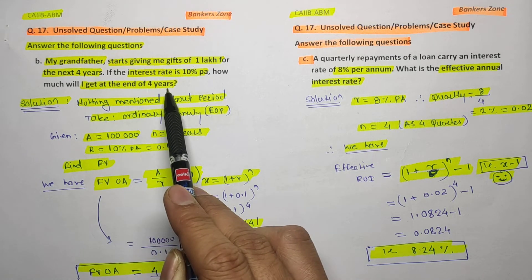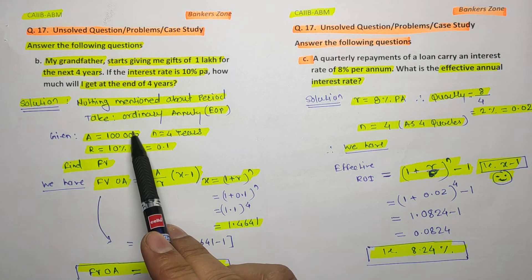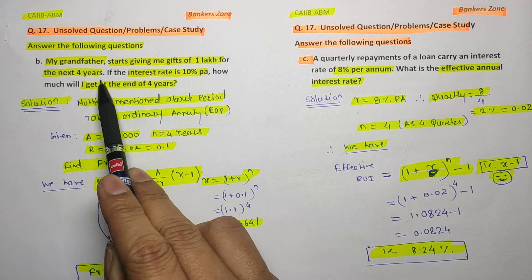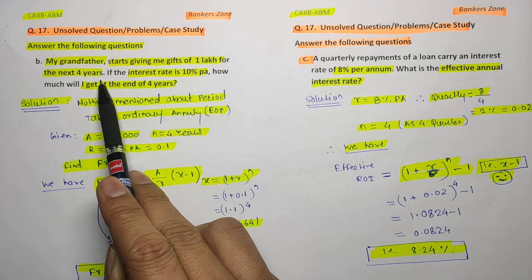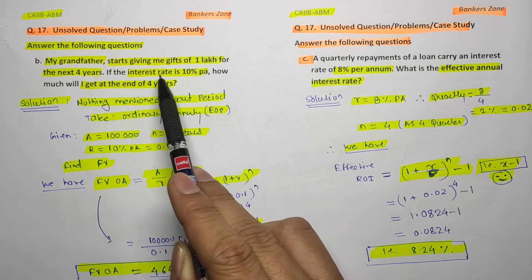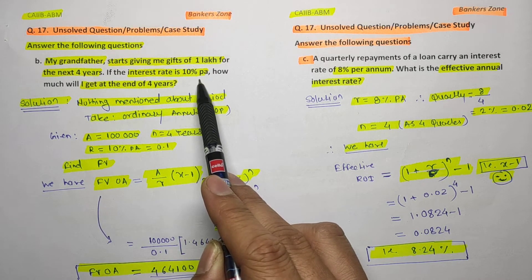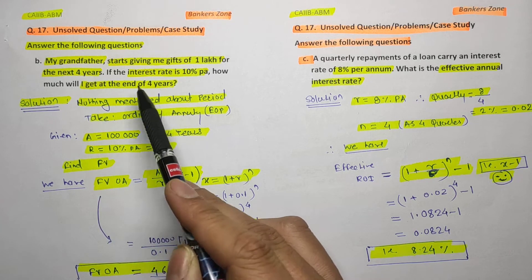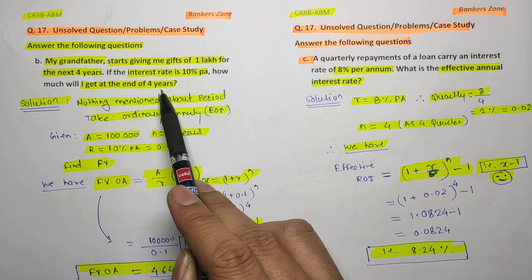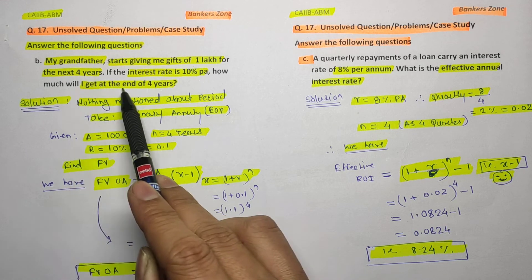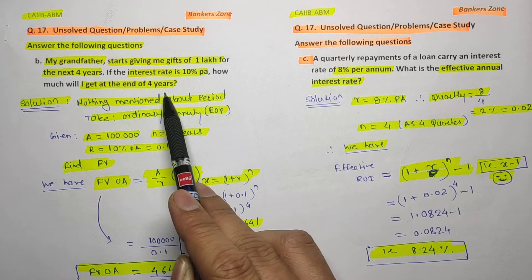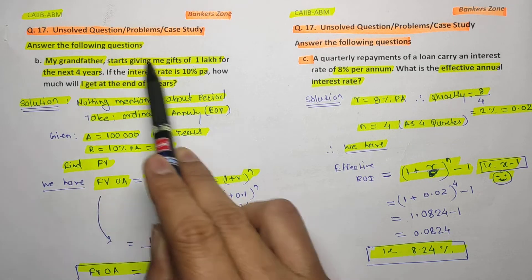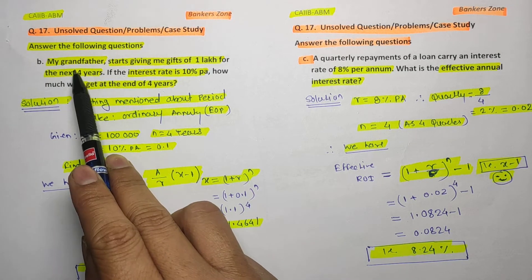It is very simple — my grandfather is giving me one lakh rupees for the next four years, that means total four lakh I will receive. If the interest rate is 10 percent per annum, how much amount will I get after four years? That means we have to find the future value — what amount I will get at the end of four years, that is nothing but the future value we have to calculate.